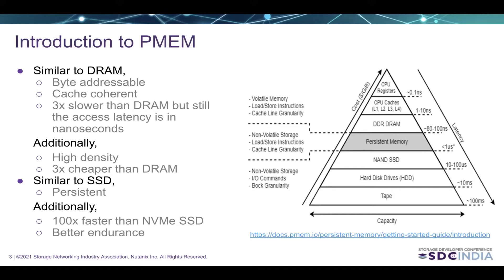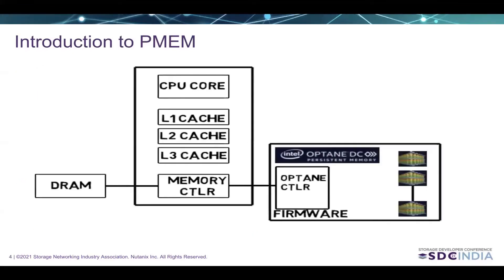Similar to SSD, it is persistent. Additionally, it is 100x faster than NVMe SSD and has better endurance. Persistent memory devices come in different form factors. One such example is Intel Optane SSD, which can be connected to a PCIe slot. For our use case, we need persistent memory as a memory device connected directly to the memory controller. The advantage is that the CPU can directly access persistent memory using load and store instructions, with no overhead of PCIe or NVMe protocol.